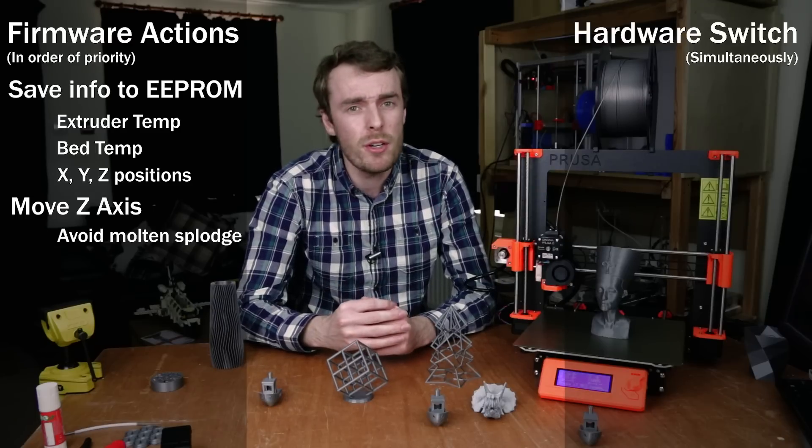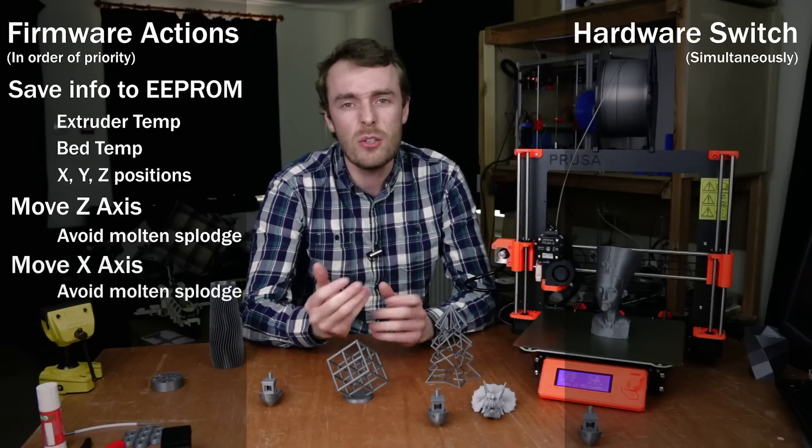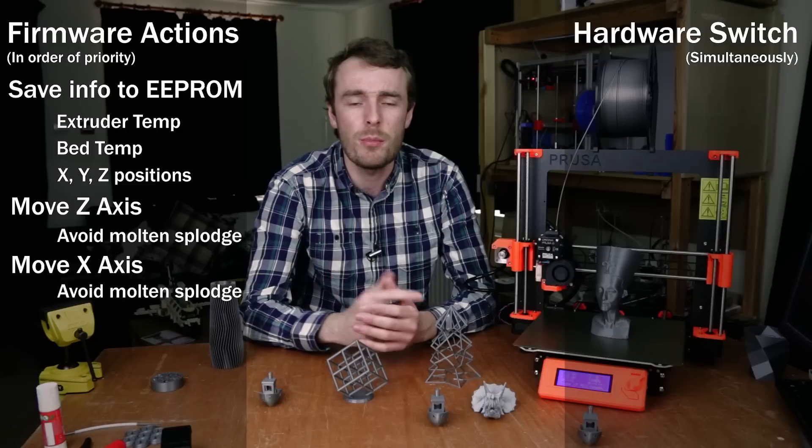Nobody wants to recover a print if it's got a big molten splodge on it. The third thing it tries to do is move the x-axis towards the home position just to get that hot nozzle away from your printed part.